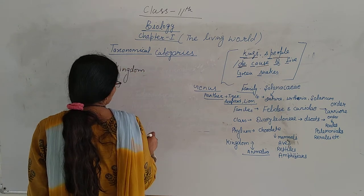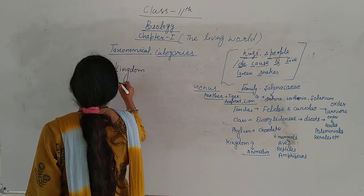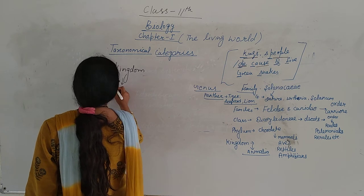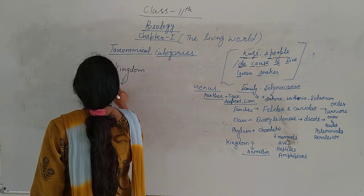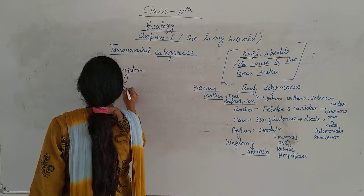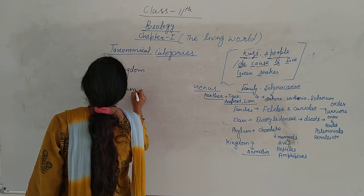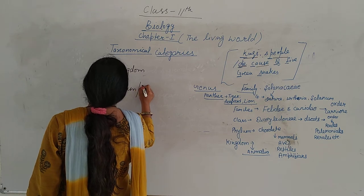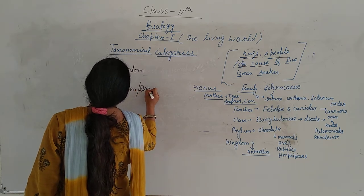Let me first write it in descending order. Kingdom, then phylum for animals and division for plants.